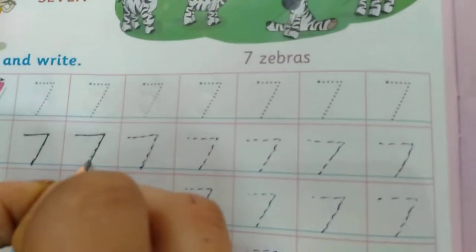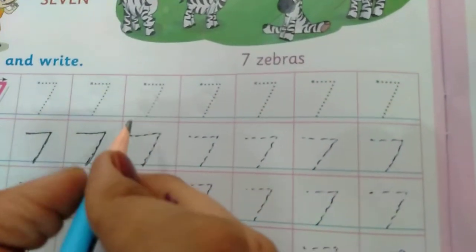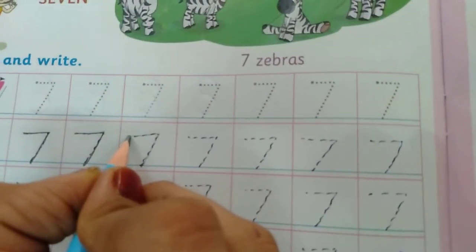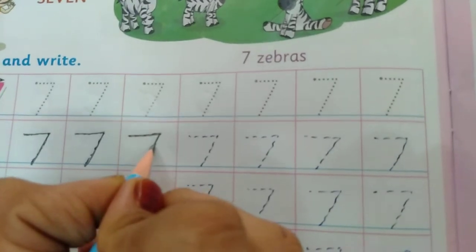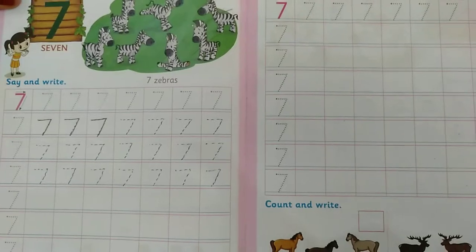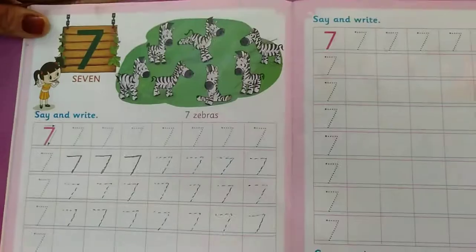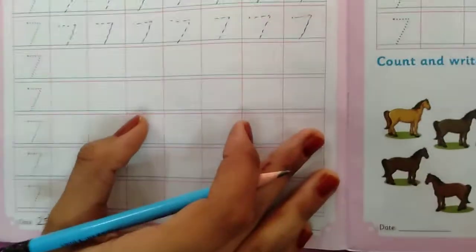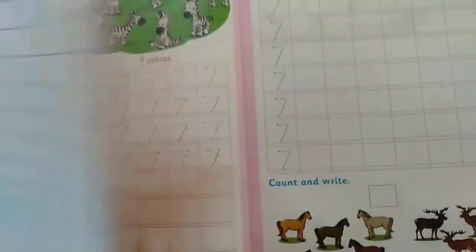Speak and write. Number 7. Students aapko bol bol ke tracing karni hai. First time slipping line karenge and slanting line. Number 7. This page number 16. Page number 16 ache se complete ho jana hai. Iske baad ham notebook me likhenge. Number 7.